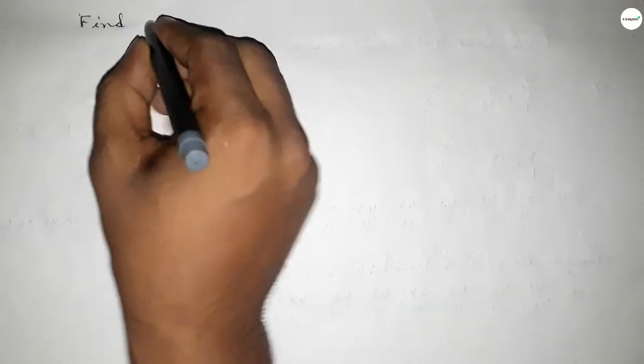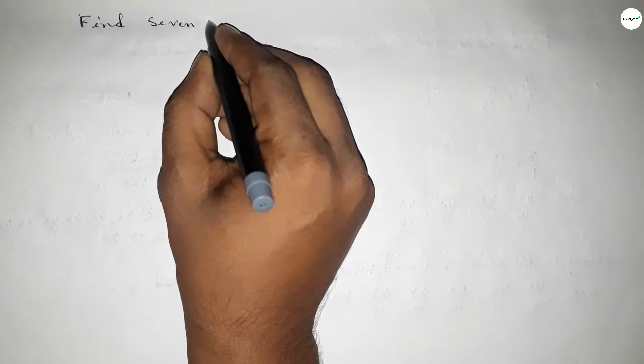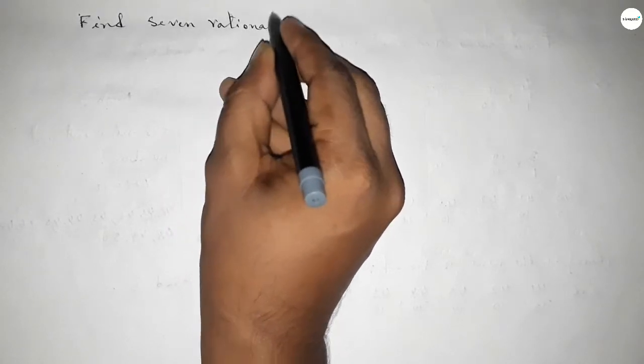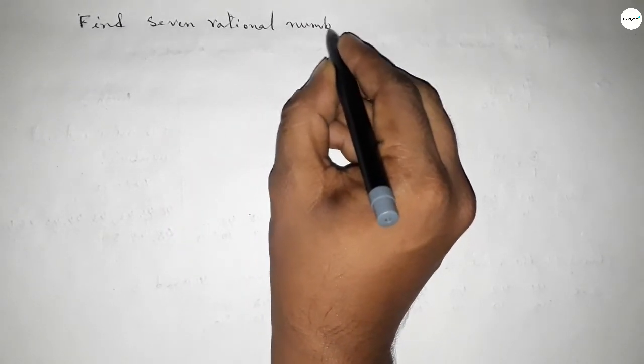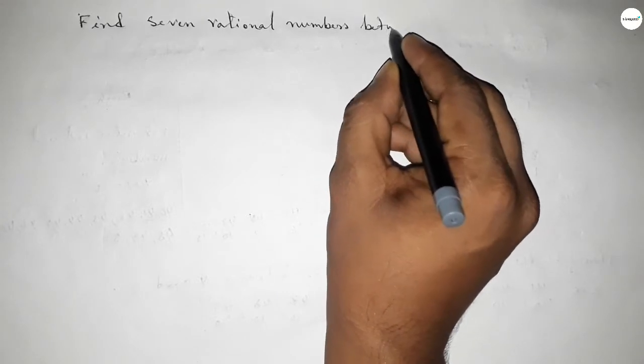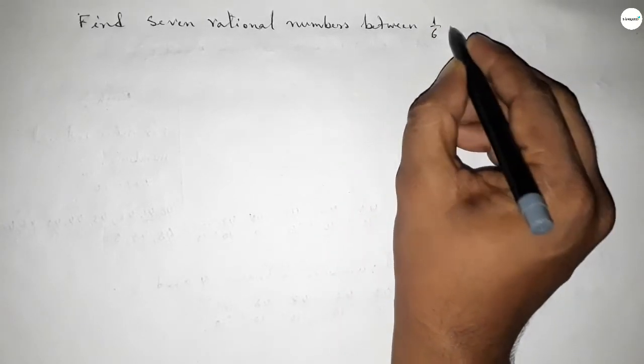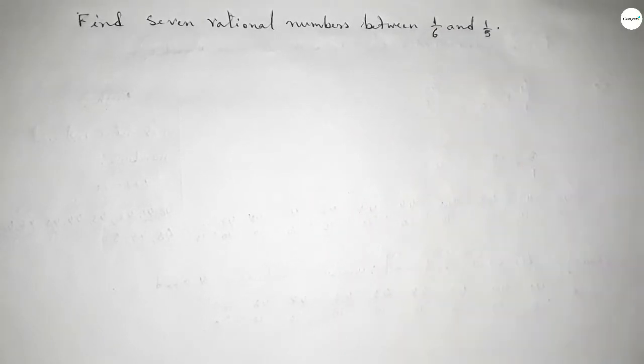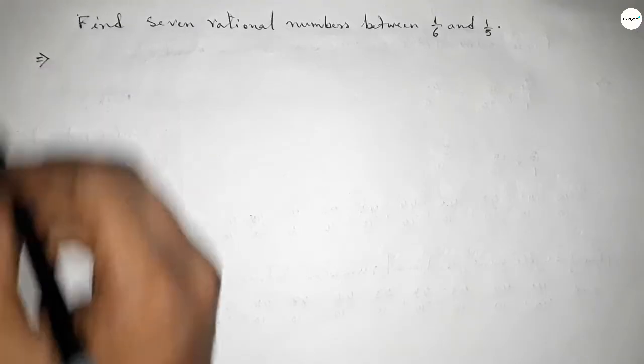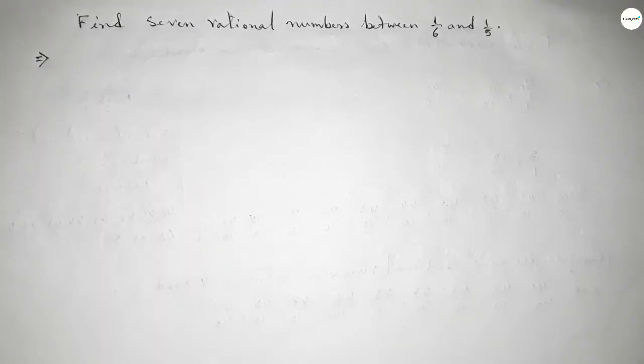Hi everyone, welcome to SSR classes. Today in this video we have to find seven rational numbers between 1 over 6 and 1 over 5. So let's start the video. First of all, write down here the given numbers: 1 over 6 and 1 over 5.